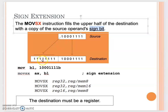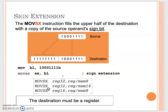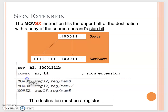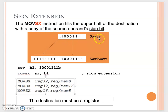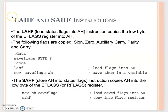If the sign bit is zero, we fill with zeros. MOVSX has the same syntax as MOVZX, but the destination operand can only be a register. MOVSX is used to move a signed integer to a larger destination. Those are the two different move extension instructions.